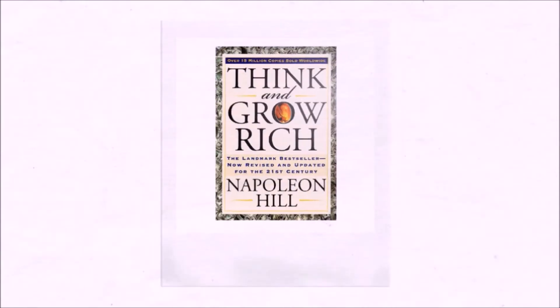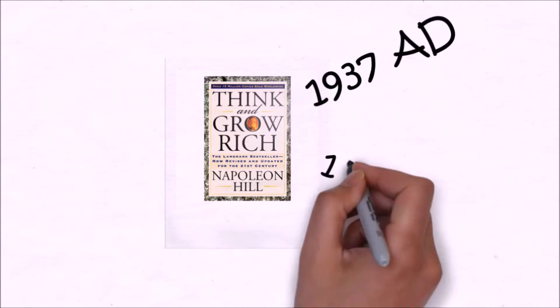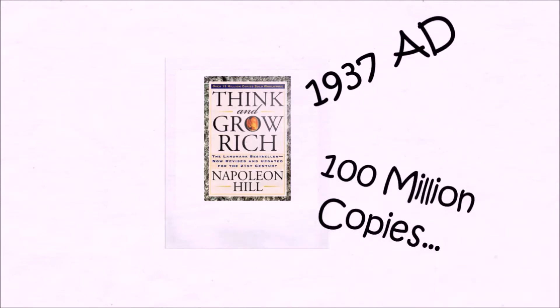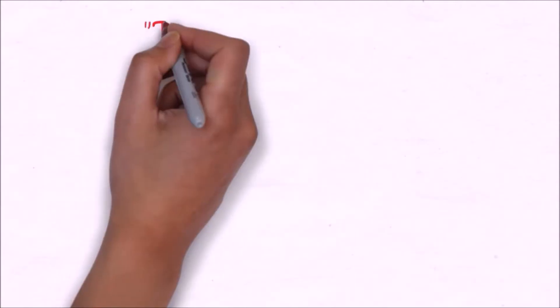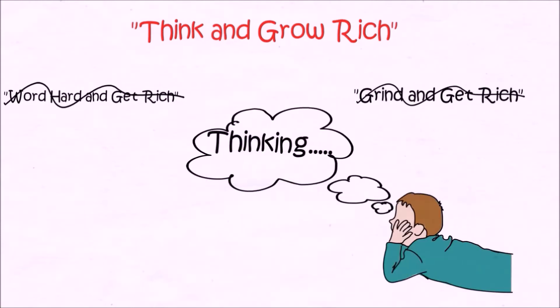Think and Grow Rich by Napoleon Hill. This book was published in 1937 and till date it has sold more than 100 million copies. Let's look at the title of the book: Think and Grow Rich. It isn't saying work hard and get rich or grind and get rich, because thinking is the greatest capacity we humans have been endowed with.